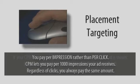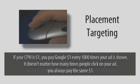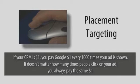For example, assuming your CPM is $1, this means you agree to pay Google $1 every 1,000 times your ad is shown. It doesn't matter how many times people click on your ad — you always pay the same amount. Whether you receive 20 clicks or 600 clicks, you still pay the same $1.